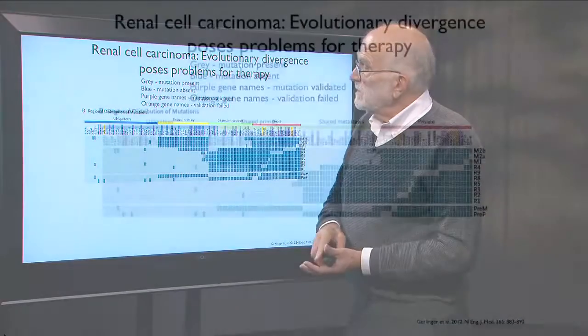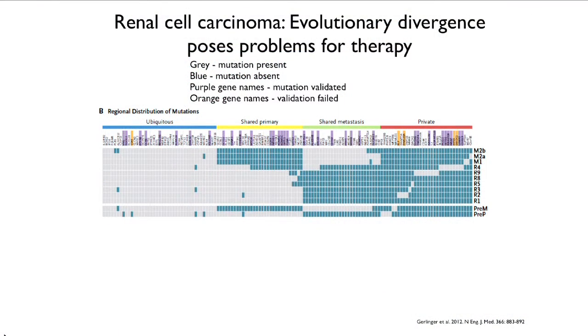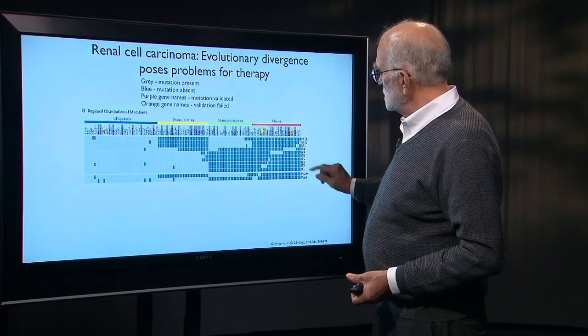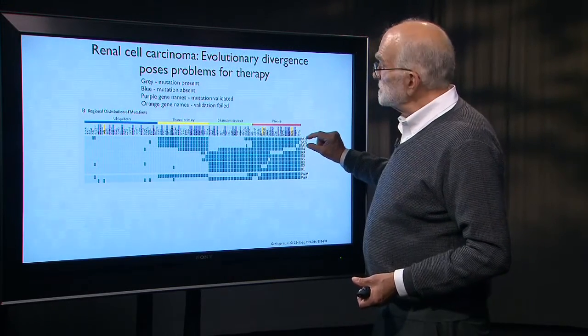If you look at these different samples, so these are different parts from the kidney. This is the chest wall sample. This is a couple of other metastases.